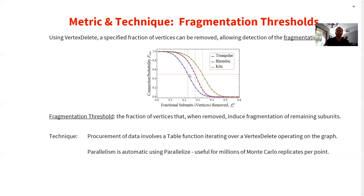I'll go through the technique briefly since this is a Wolfram language talk. Using vertex-delete with a graph representation of the lattice, you use a table function to iterate over the x-axis variable using vertex-delete operating on the graph of your choice. Because you need to Monte Carlo this for each point — running a hundred thousand, a million, or ten million replicates — the automatic parallelism within the Wolfram language is capable of expeditiously generating the millions of points needed for Monte Carlo.